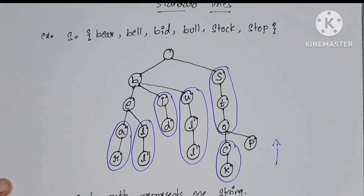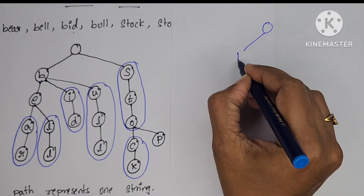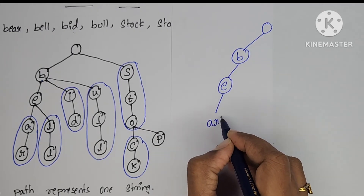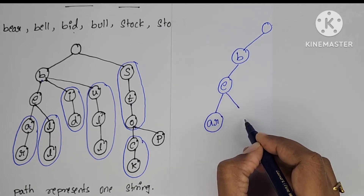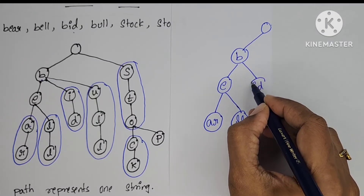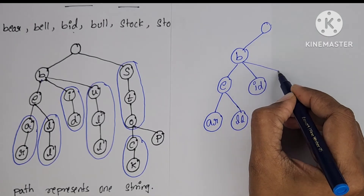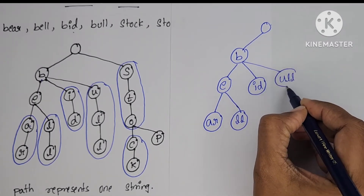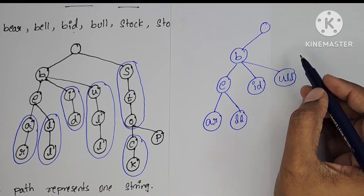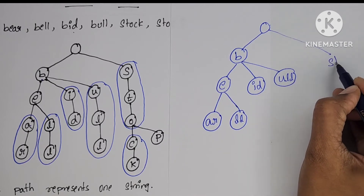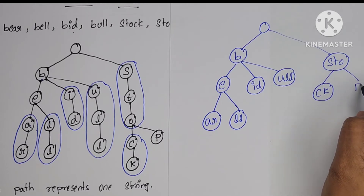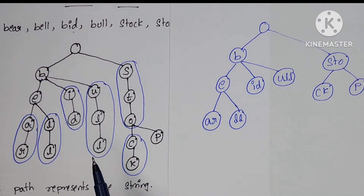For 'stock' and 'stop', from S to O there is only one path, so we can combine S, T, O in one node. From C to K there is also only one path, so we can combine C and K. Like this, we can combine nodes in a standard trie, automatically reducing the number of levels and making the search process easier. Now I am going to draw the compressed trie.